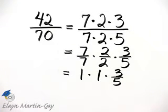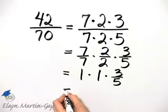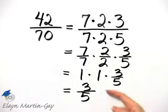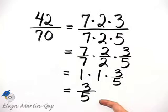And then what is this entire product? Well 1 times 1 times 3 fifths is 3 fifths. So this fraction simplifies to 3 fifths and there are no more common factors.